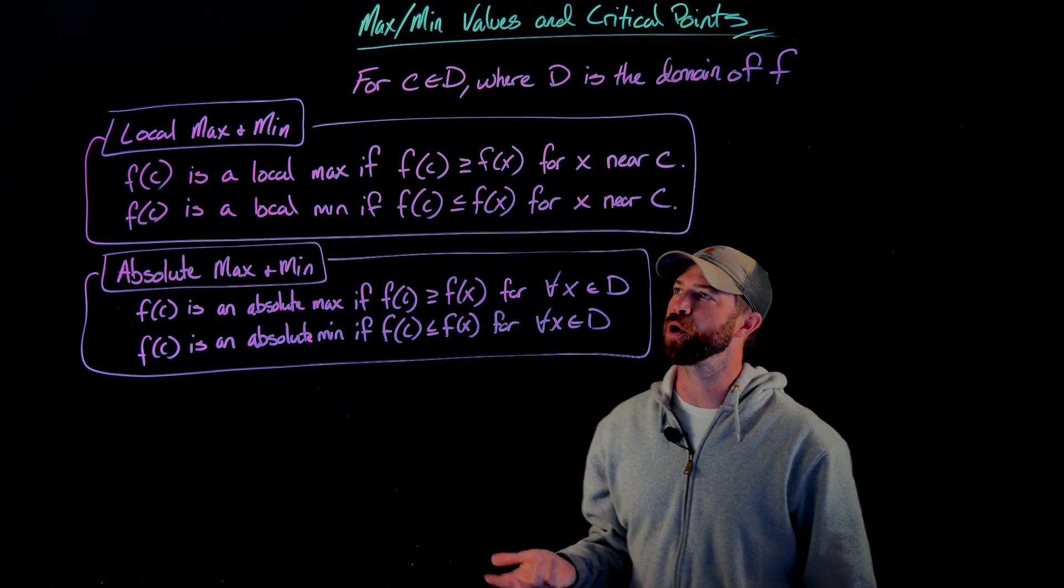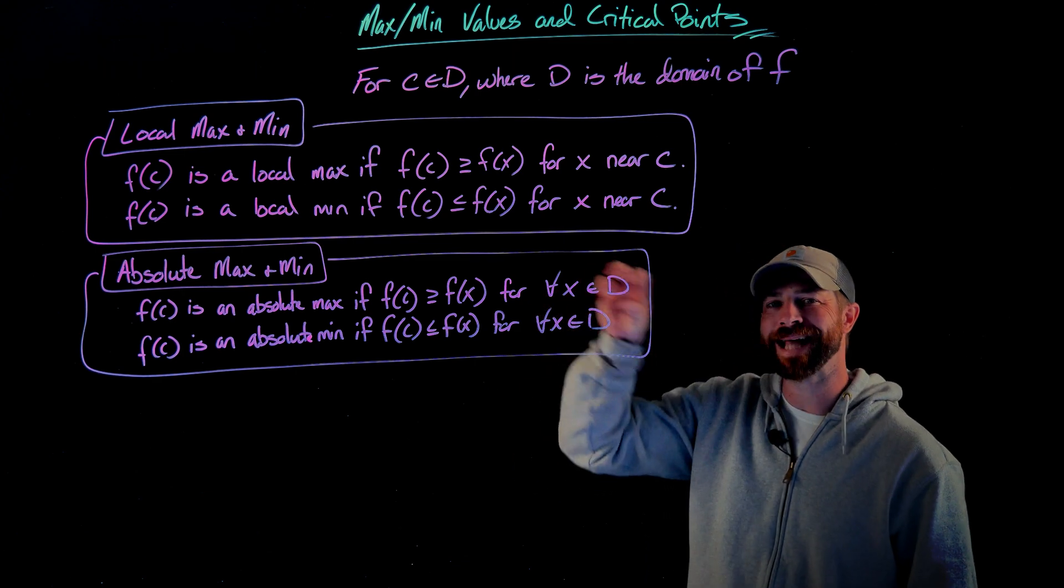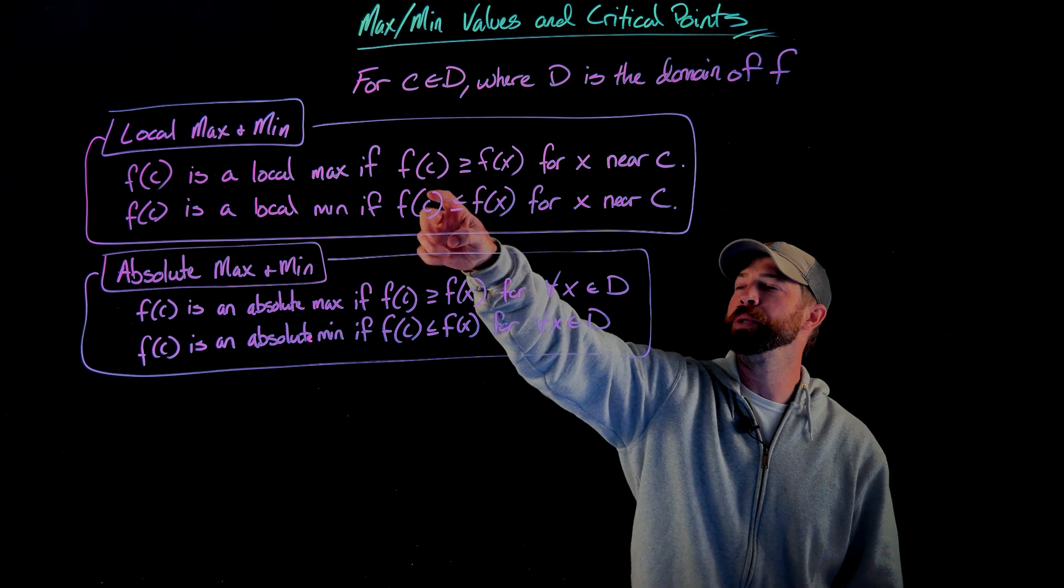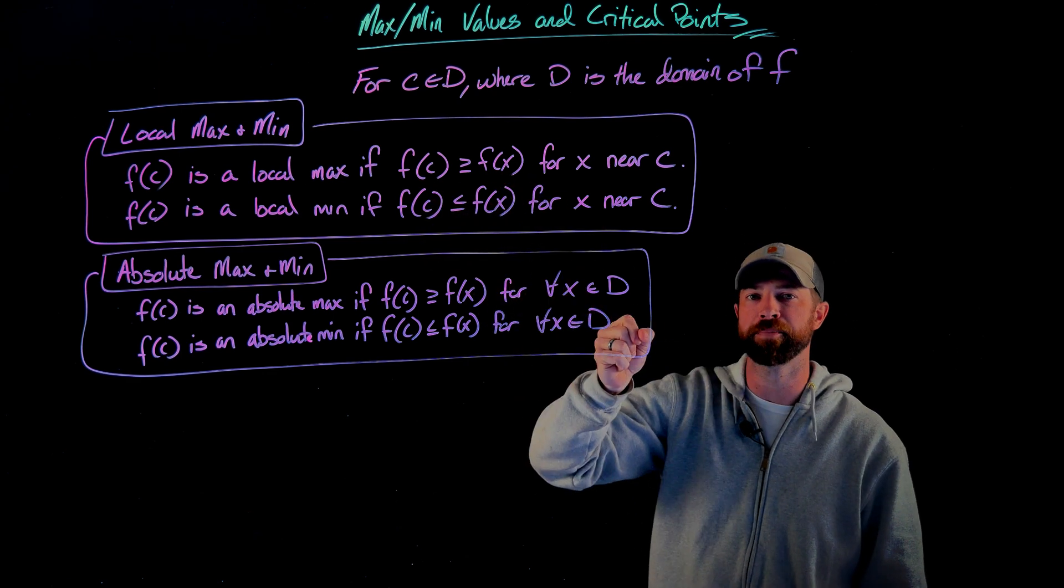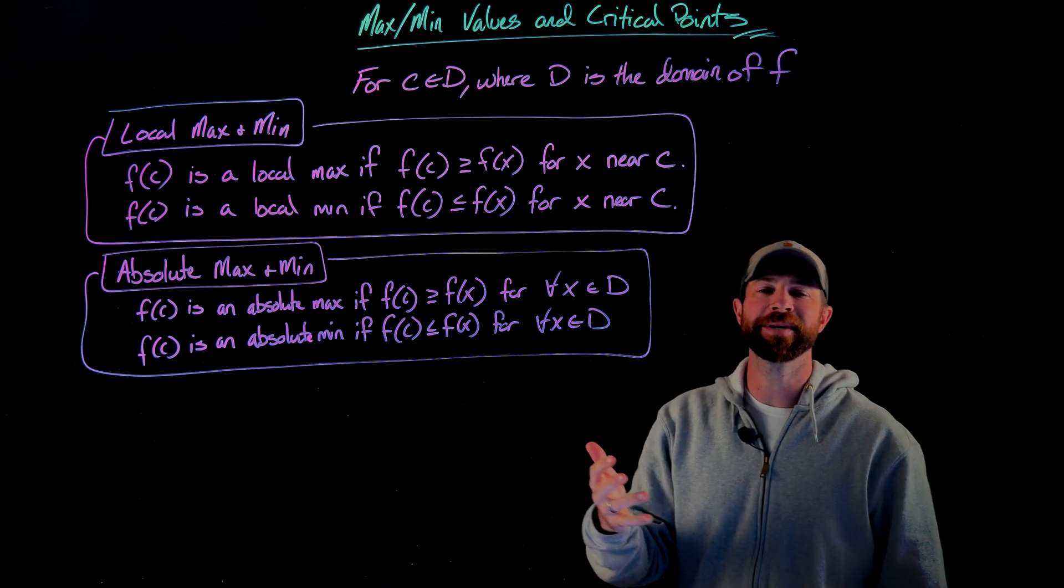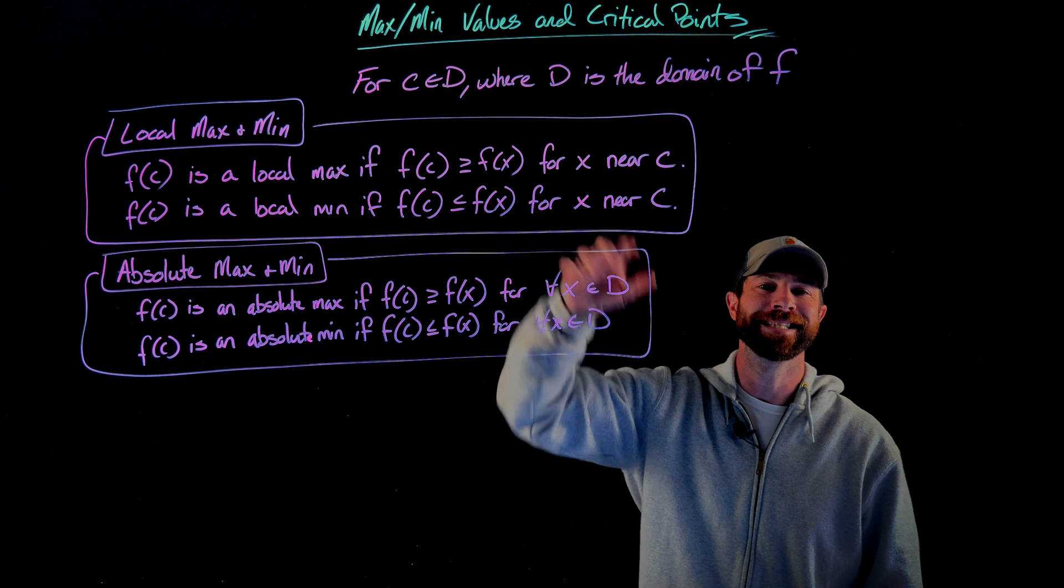For local max and local min values, f(c), so the output at the x value of c is called the local max if that value, that output value is bigger than every other output value near that c value. f(c) we say is a local min if it's less than all the other values near that value.